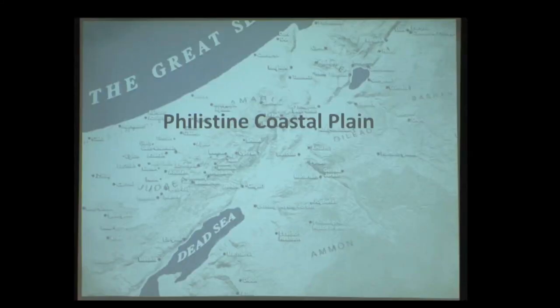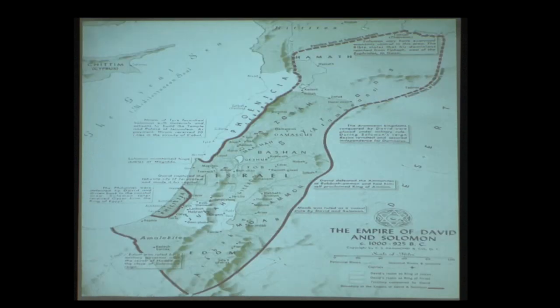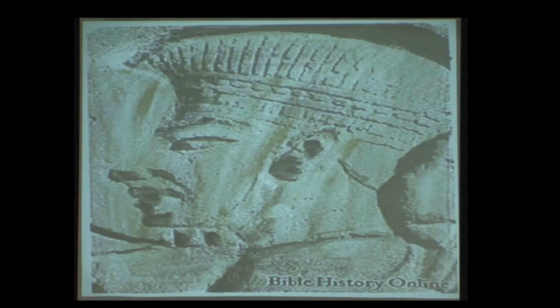This will be our last region of the night: the Philistine coastal plain. It has Jaffa as the north pole and Gaza as the south pole — about 15-20 miles long. This is the hub, the ground zero for the Philistines.